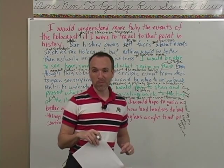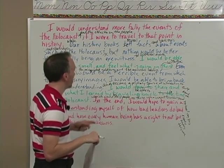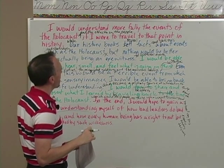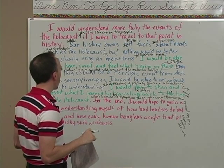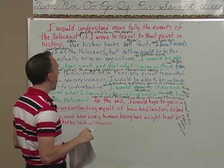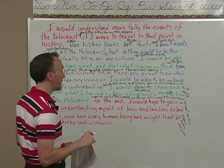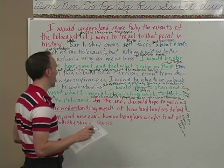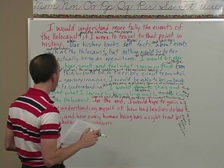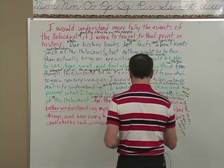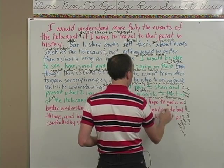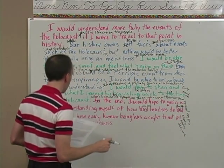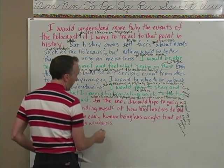I hope you're definitely double-spacing your drafts, because mine is kind of messy since I don't have space. 'In the end, I would hope to gain a better understanding myself of how bad' — that's not what I want to say. How about 'how wicked leaders do terrible things, and how every human being has a right to not be controlled by such wickedness.' Yeah, I like that. I think that's perfect.